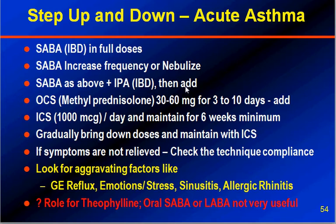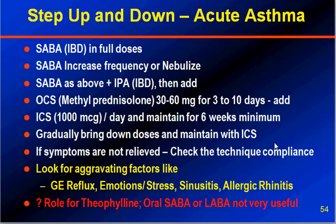If still not controlled, give oral corticosteroids — methylprednisolone 30 to 60 mg for 3 to 10 days. And if it is still not controlled, add inhaled corticosteroids at 1000 micrograms per day and maintain for a minimum of 6 weeks. Then gradually bring down the dose of inhaled corticosteroids, oral corticosteroids, and the bronchodilators.